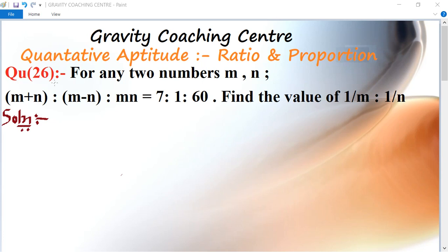Question number 26. For any two numbers m, n where (m+n) is to (m-n) and mn equal to 7 is to 1 is to 60, find the value of 1 upon m is to 1 upon n.